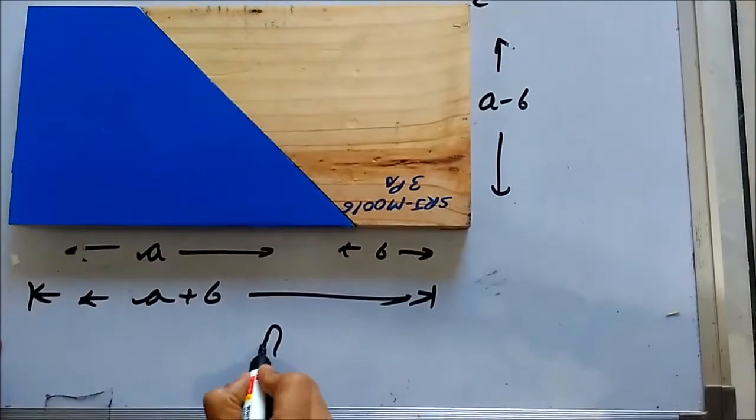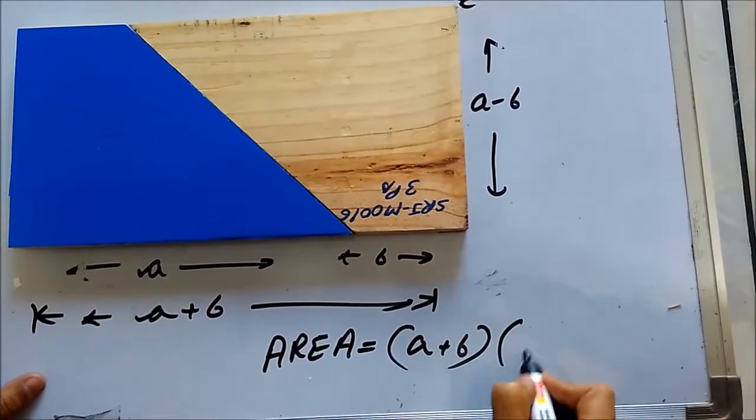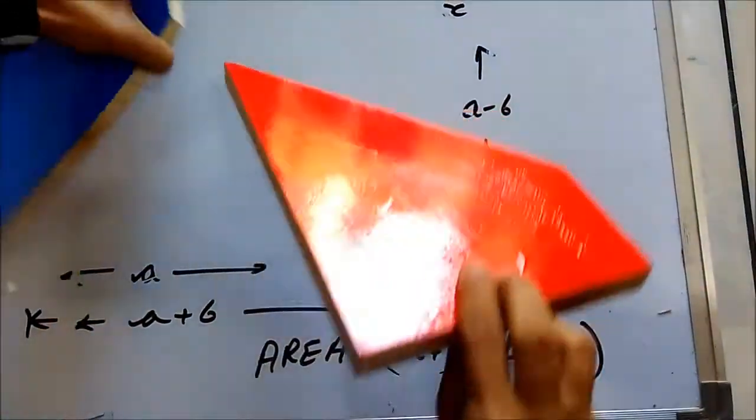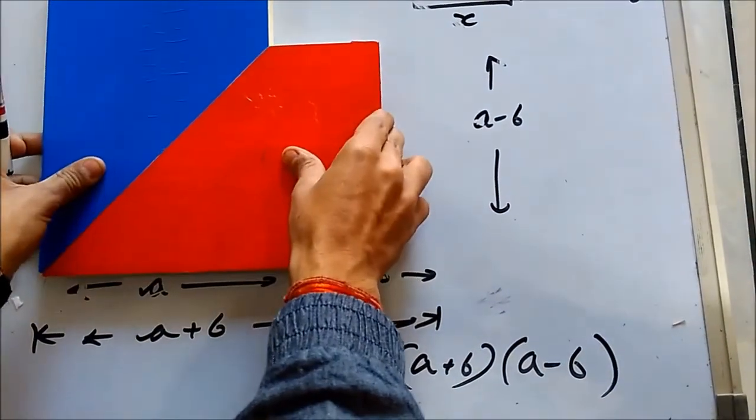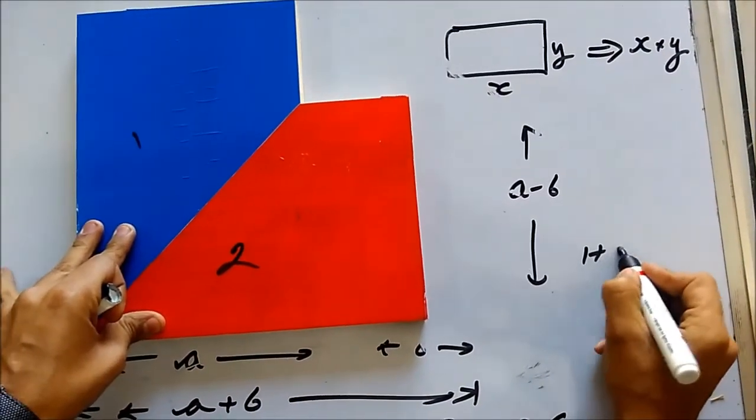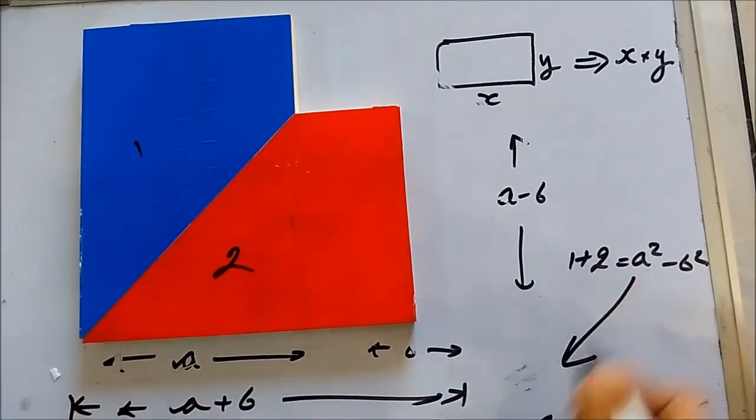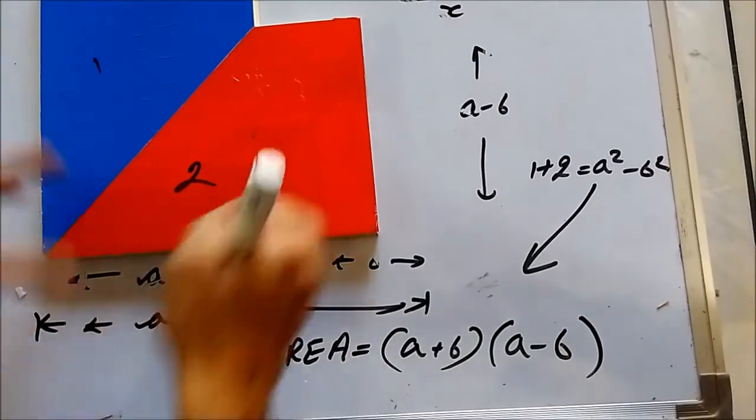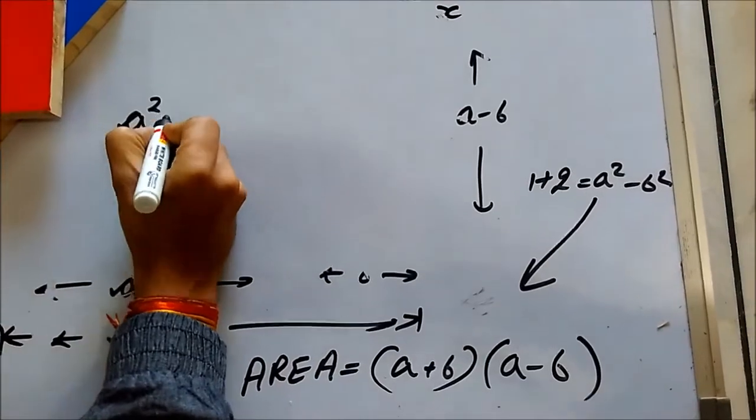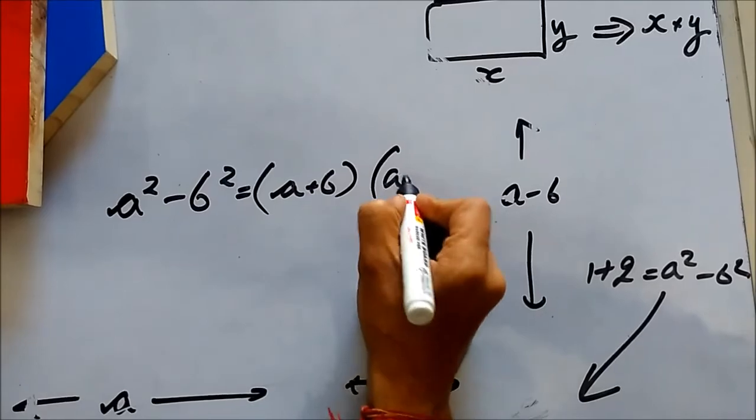So when we write the area for this particular figure, it comes out to be a plus b times a minus b. Initially when we made this problem like this, we said that one plus two equals to a square minus b square. So now simply relating this to this one, what we can say is that this a square minus b square is equal to a plus b times a minus b.